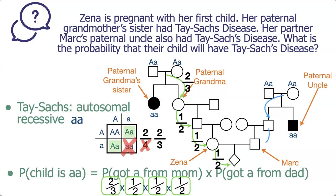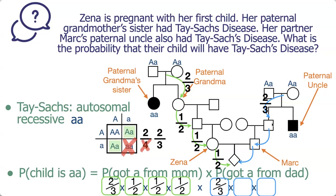On the dad's side, there are three transmission events: from Mark's grandparents to his father, from his father to Mark, and from Mark to the child — so we need three squares. Using the same Punnett square logic, Mark's father has a two out of three chance of being a carrier. The chance he passed it to Mark is one out of two, and the chance Mark passed it to the offspring is also one out of two. Multiplying all terms together, the final answer is one out of 72.